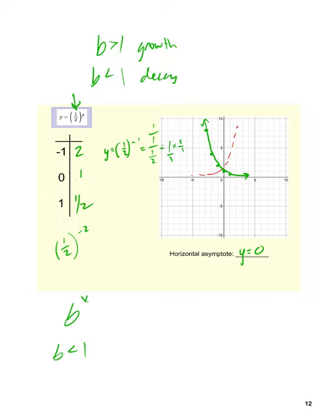We could continue putting values in and this would keep going up to the left, getting more and more steep. The decay shows what's happening over time with x. A one-half base like this would be equivalent to a car losing half its value in one year. A lot of real-world situations don't go into the negative x — they tend to work forward, like a car starting at $20,000 and decaying down. Also, when I say b is less than 1, it's also greater than zero — we aren't going to work with negative b values, so b is between 0 and 1, not inclusive.